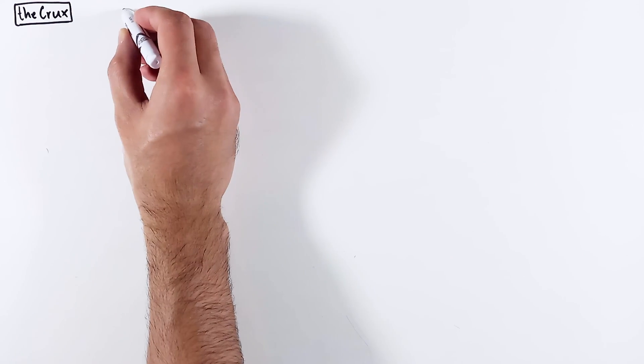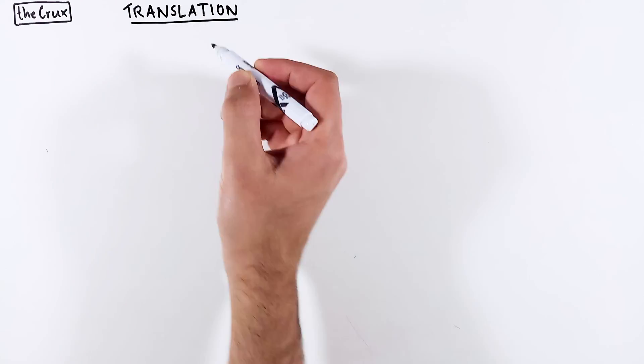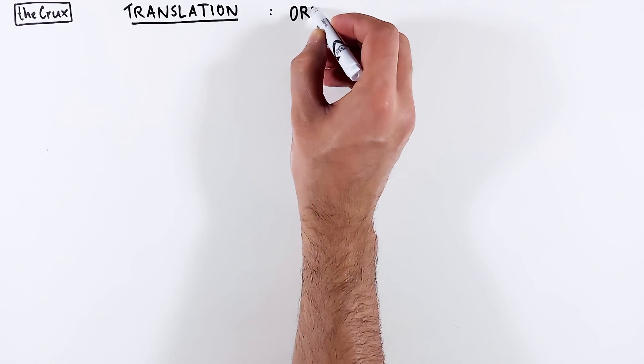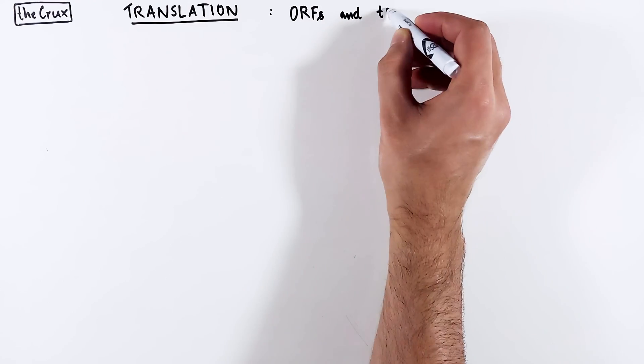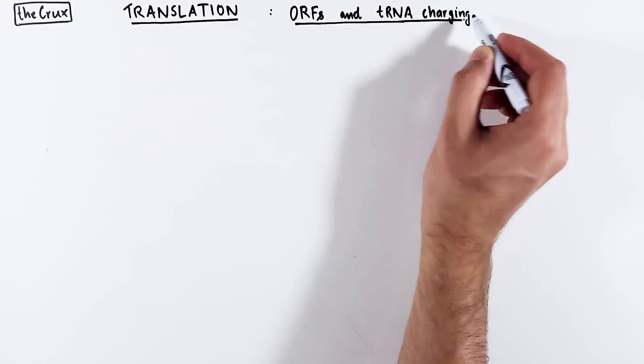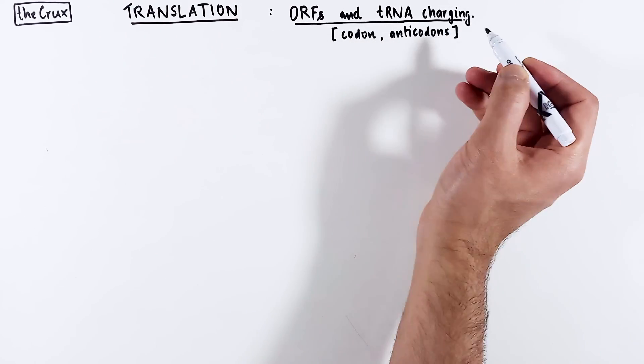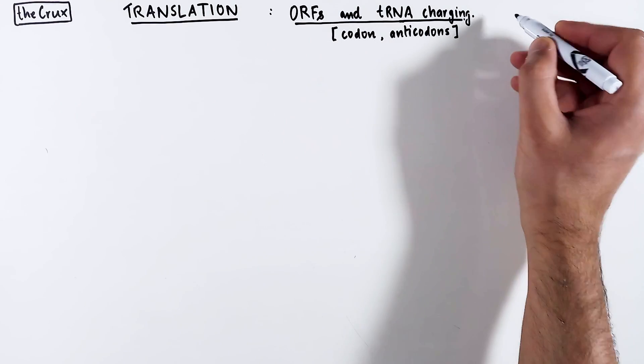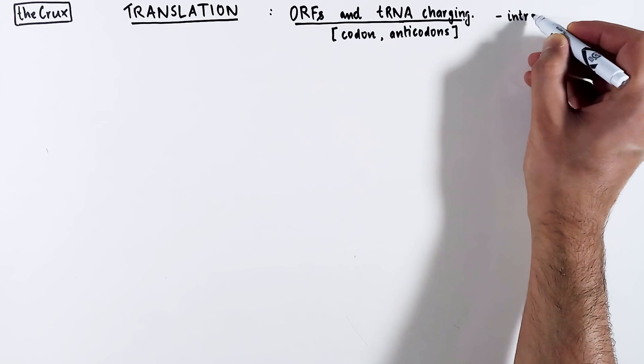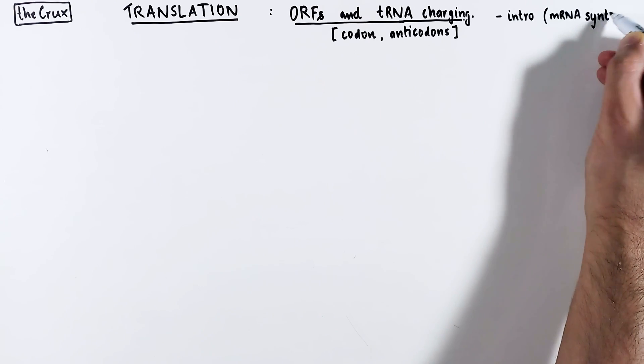In this video, we continue our discussion on translation, which is the process of protein synthesis. We will try to understand open reading frames and the process of transfer RNA charging. Alongside this, I will also point out some technical details about codons and anticodons. This video is a follow-up from the intro video where we focused quite a bit on the mRNA syntax, so you should definitely watch that before diving into this one.